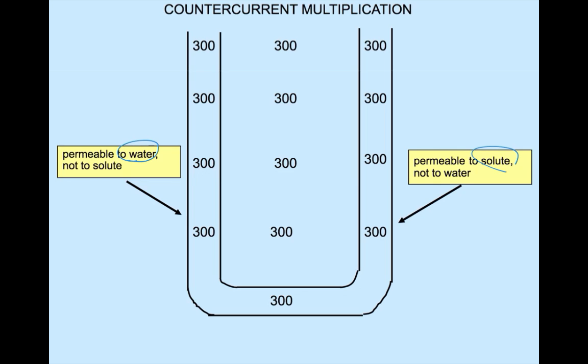So remember that the ascending limb is permeable only to solute. Now assume that at any single point a horizontal gradient of 200 milliosmolar can be created between the inside and the outside of the tubule.